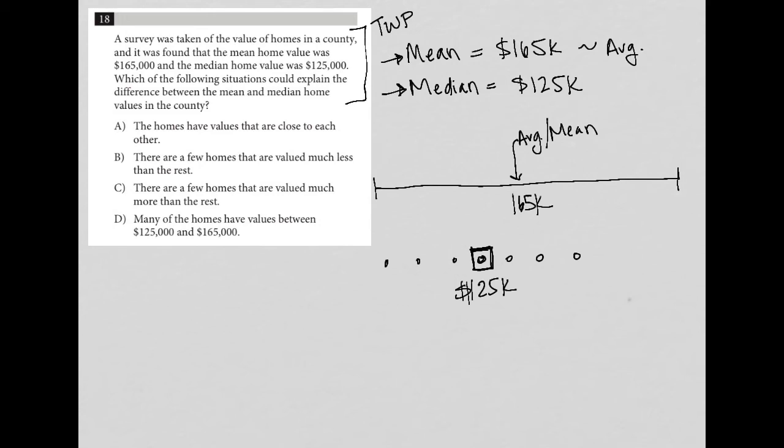So choice A says the homes have values that are close to each other. Well, the only value for sure that we know is 125,000. The average does not mean that there's actually a house that has that value. It just means that $165,000 is the average value of the homes, whereas the median represents this is an actual house. So if A were correct, that means all the home values would be close to 125,000. And therefore, if that were the case, we would not be able to get 165 as an average. So I'm going to cross A out.